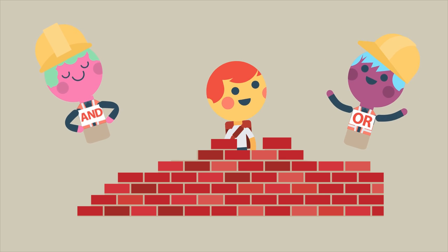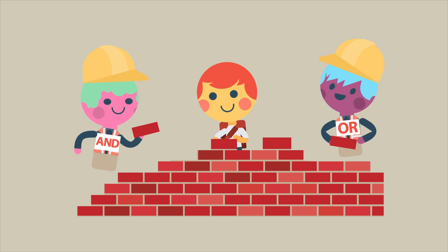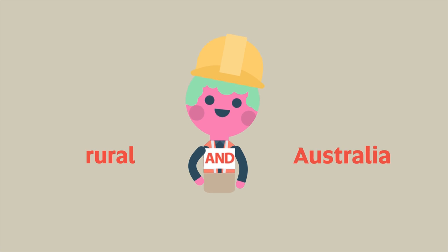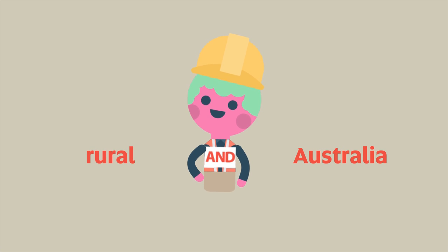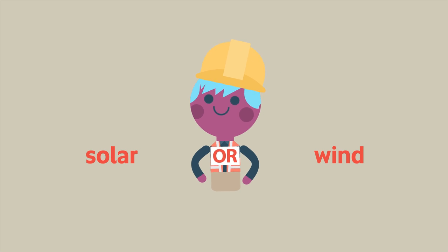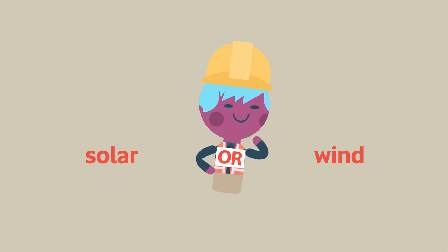AND and OR will help you to do this. Use AND to connect different concepts together, like rural and Australia. Use OR to connect similar concepts or synonyms together, like solar or wind.